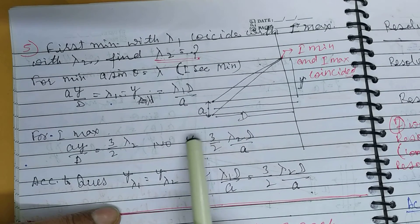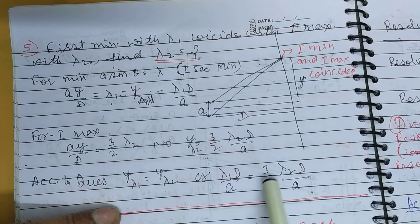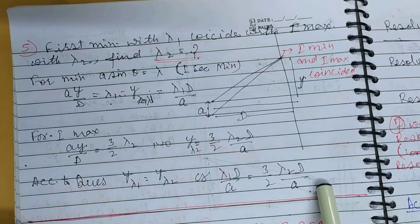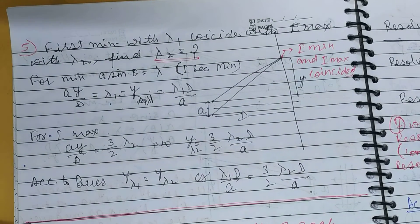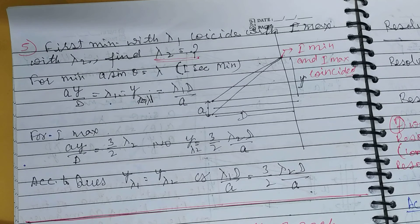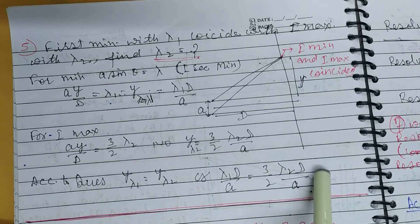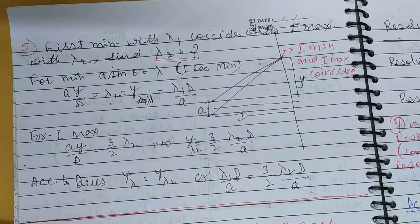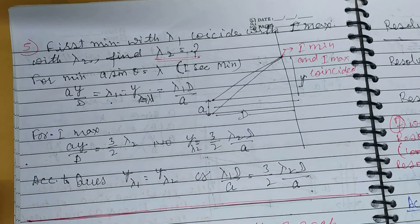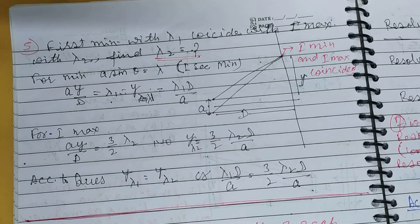The result is you will find lambda 2 equals 2 by 3 lambda 1. This is your answer. Next question is...